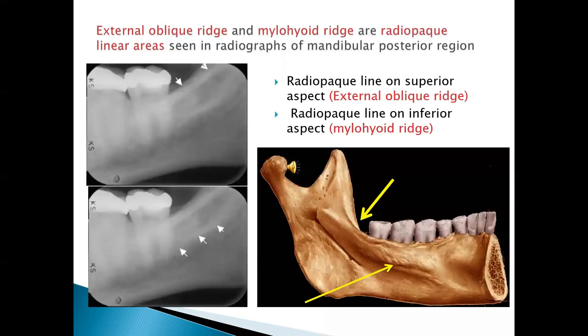In this slide, a description of the two landmarks is given. The one on top is the external oblique ridge, and the one on the lower side is the mylohyoid ridge. The mylohyoid ridge is the area where the mylohyoid muscle, which forms the musculature of the floor of the mouth, is attached. The external oblique ridge gives strength to the mandible at the area where the ramus and the body of the mandible join.